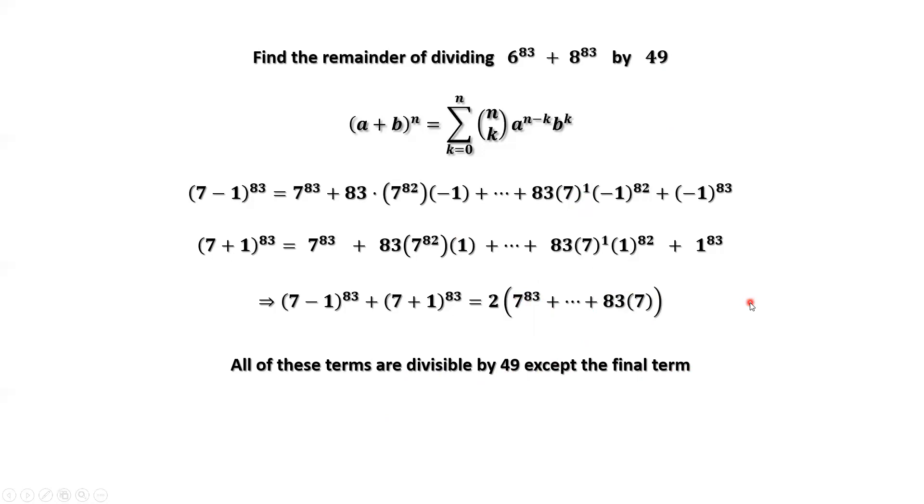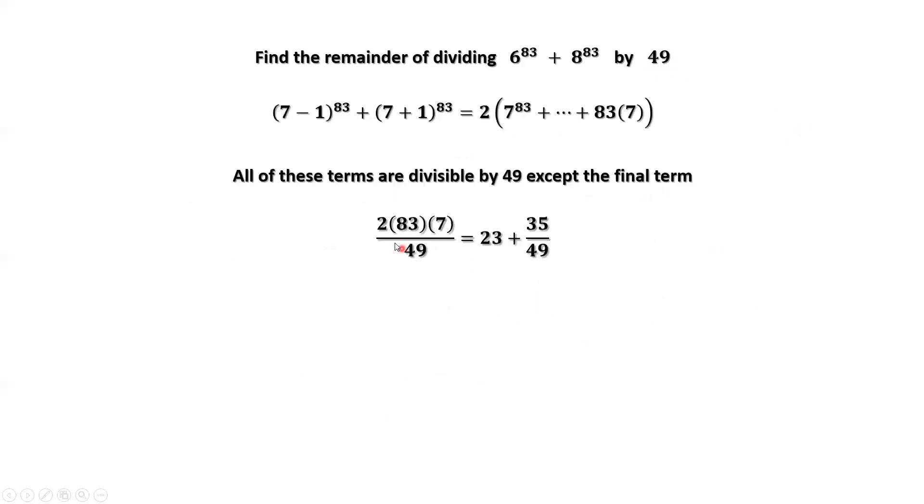Now, in order to find the remainder, we only need to find the remainder of 2 times the last term divided by 49. 2 times the last term, 83 times 7 divided by 49 equals 23 plus 35 divided by 49. Therefore, 35 is the remainder of 6 to the power of 83 plus 8 to the power of 83 divided by 49.